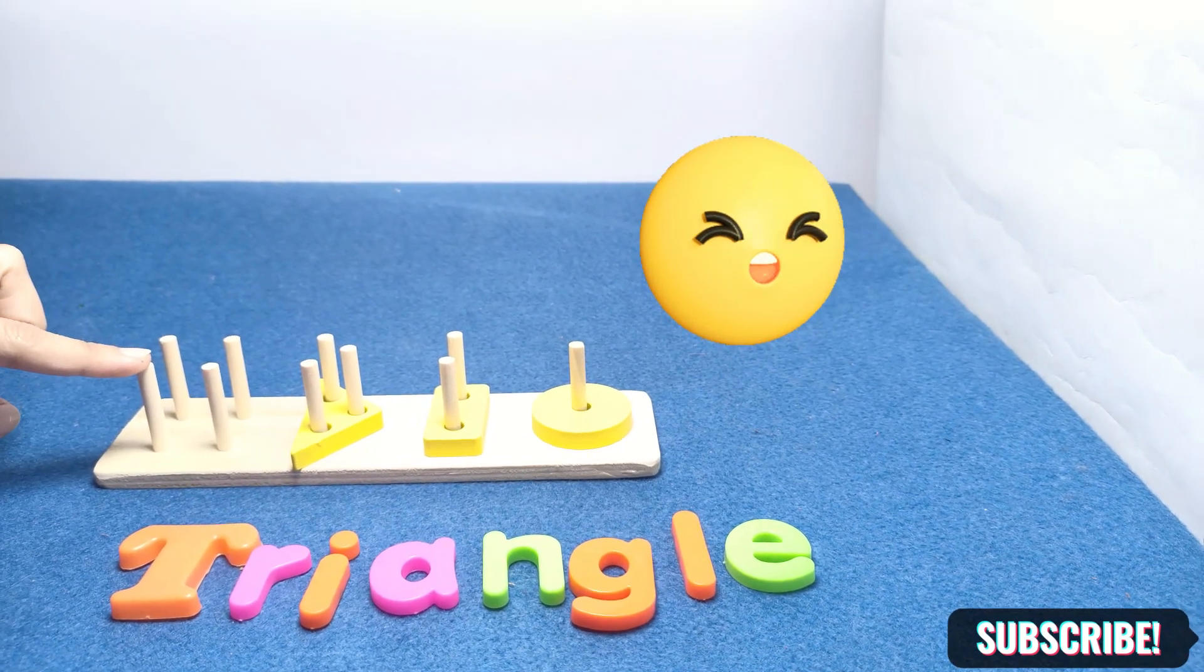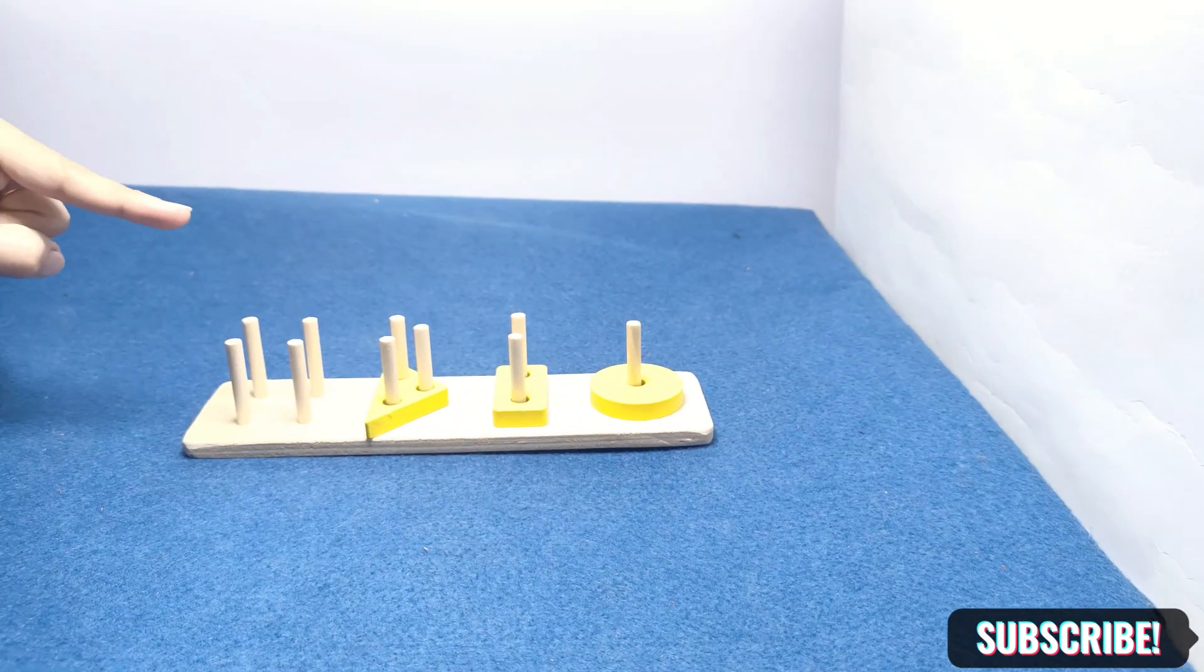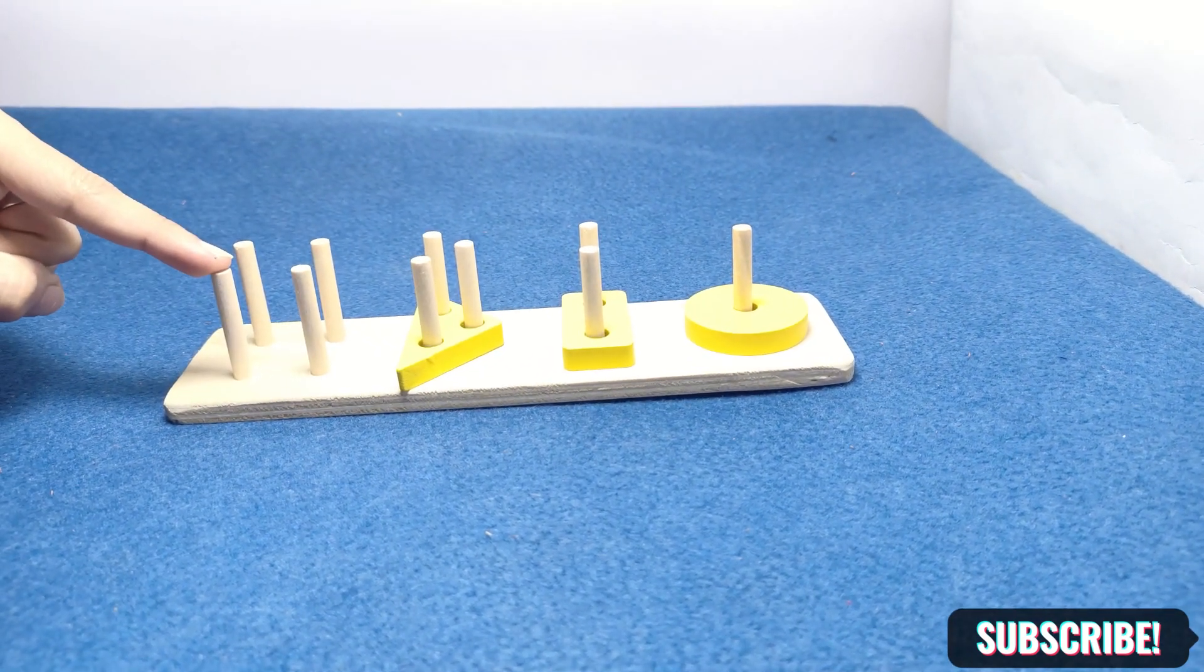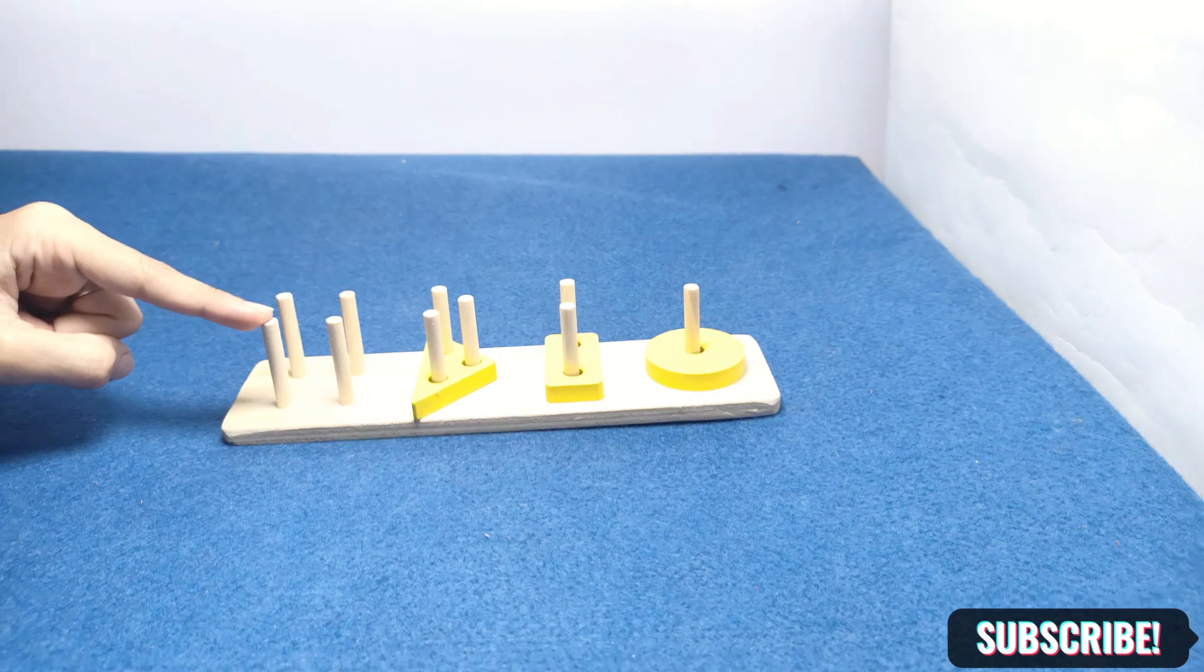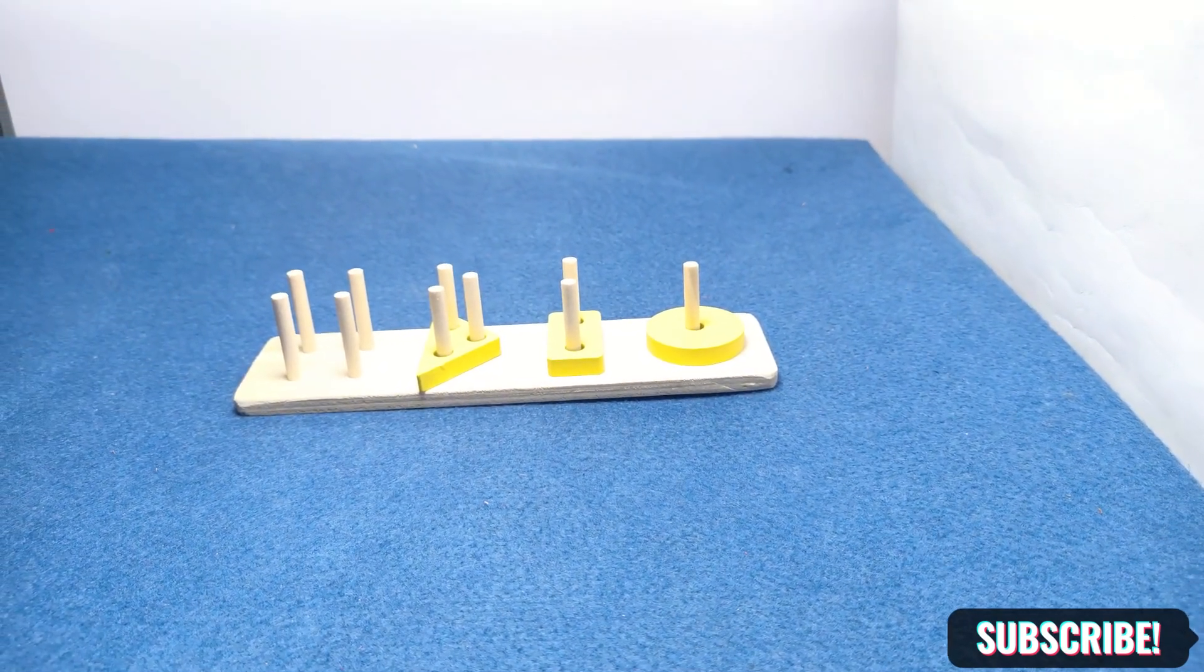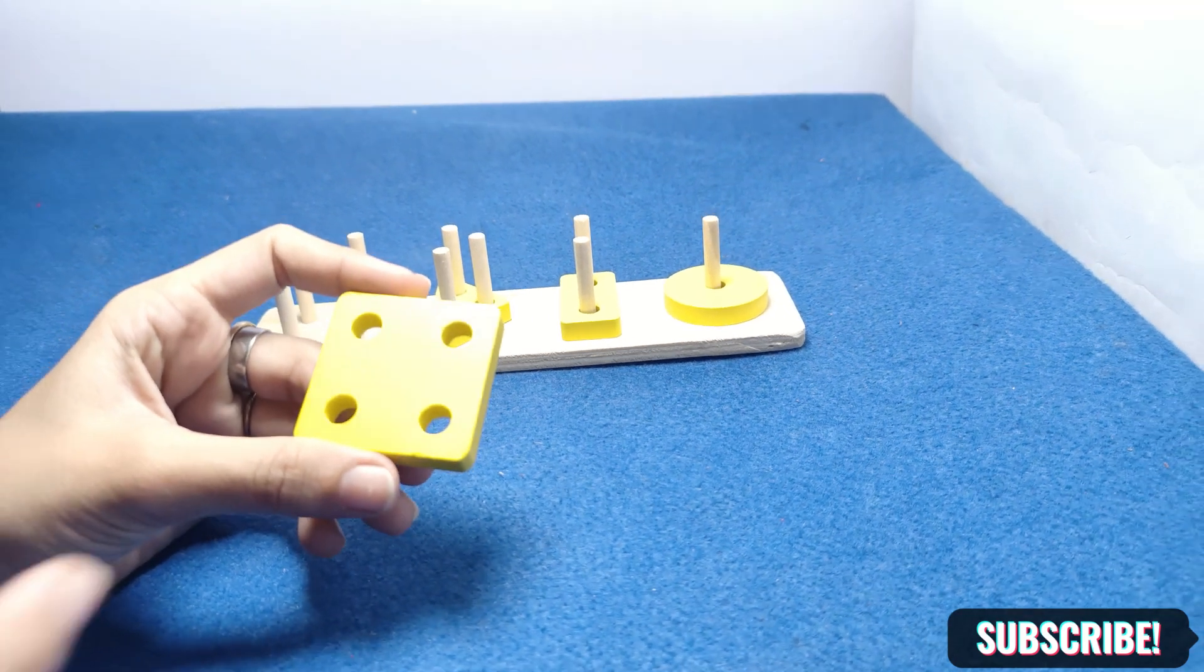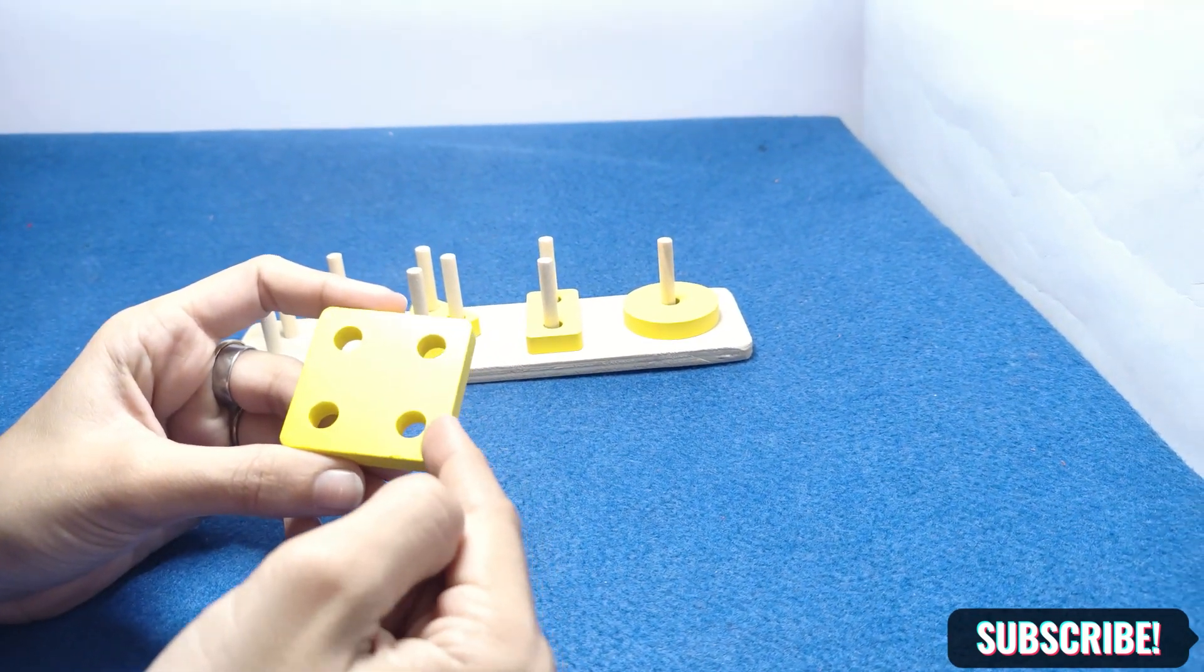Now move to the next shape. One, two, three, four. Which shape has four holes and four sides? It's a square. Yes, you're right. One, two, three.